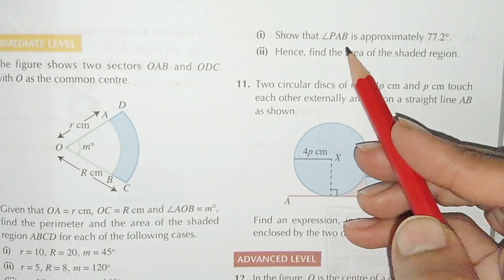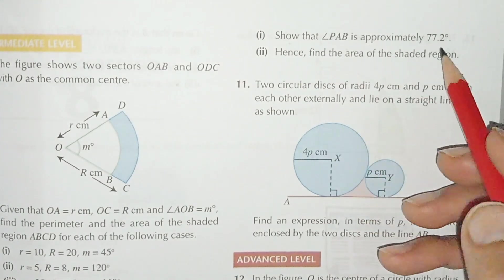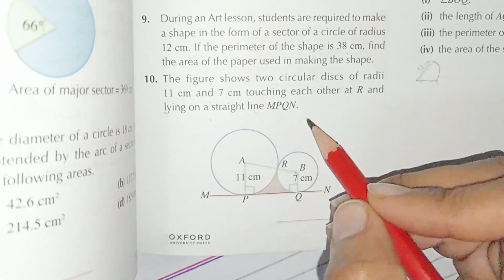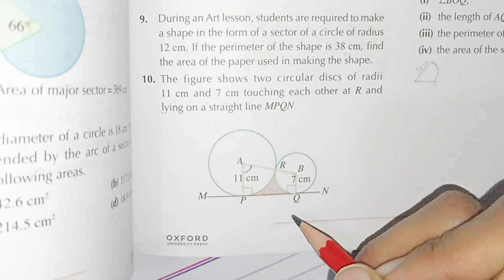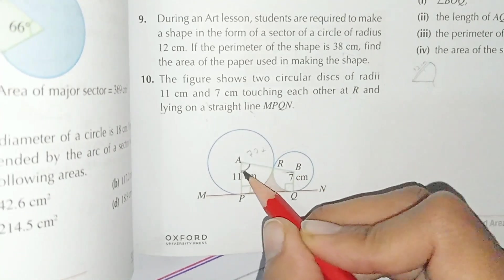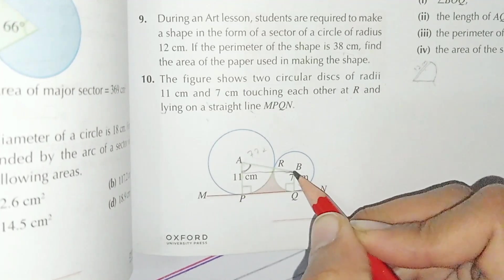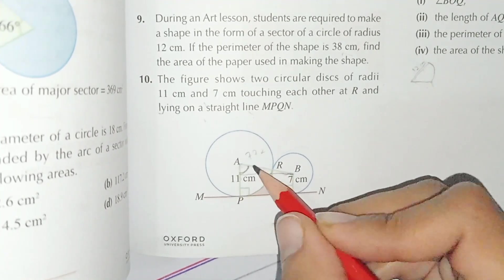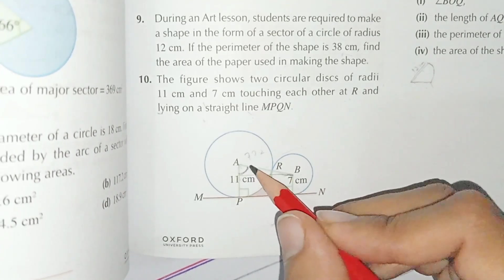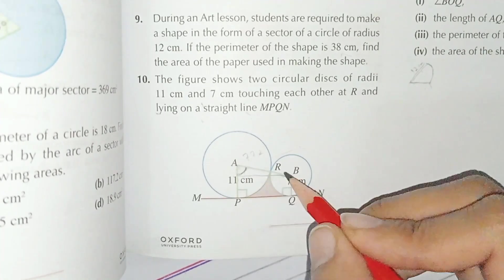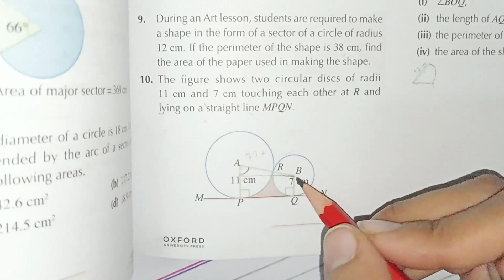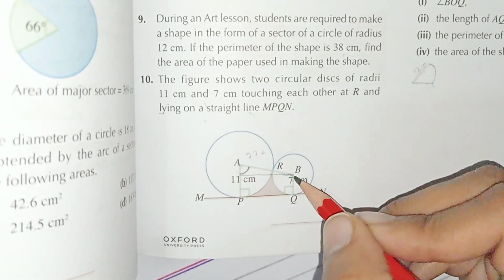In part one, we need to show that angle PAQ is approximately 77.2 degrees. We draw a line to form a triangle, and by applying trigonometric ratios we can find that angle easily. The radius of the large circle is 11 and the small circle is 7.